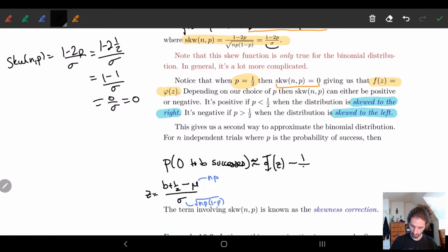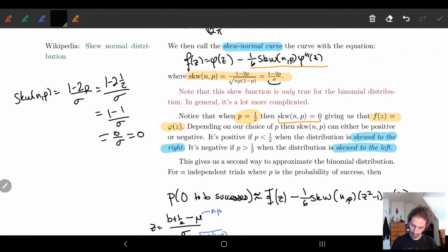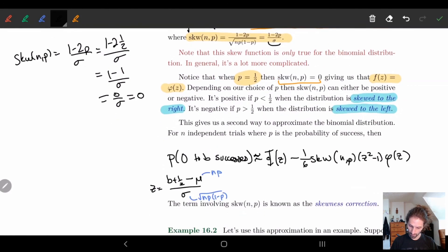So here we add a correction factor. And p(z² minus 1)φ(z). And yeah, this is basically what we end up having.